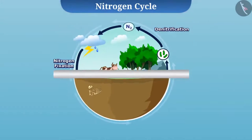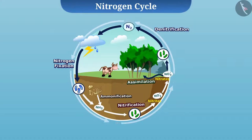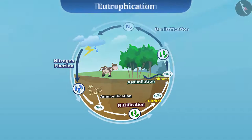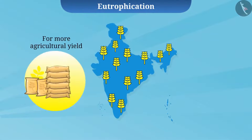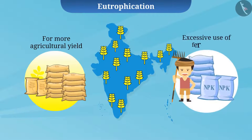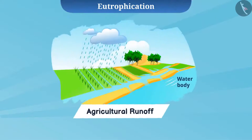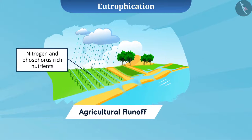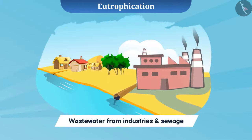The nitrogen cycle is very important for us. However, due to many human activities, it does not remain balanced and it affects the ecosystem at a particular place. One such situation is eutrophication. In the race for obtaining more agricultural yield, we use fertilizers in excessive quantities. Often, runoffs from agricultural lands transfer nutrients — usually rich in nitrogen and phosphorus — to water bodies. Wastewater from industries and sewage is another way nutrients enter water bodies.